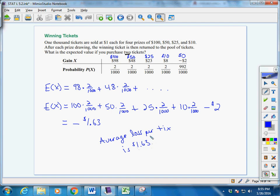So for each of those 1,000 tickets, the average loss on each one is $1.63. Expected value, again, the theoretical average.